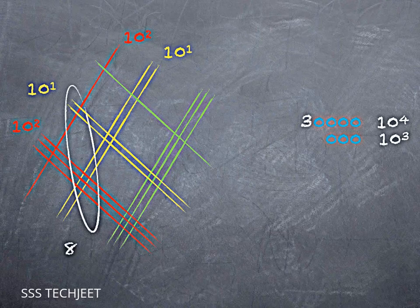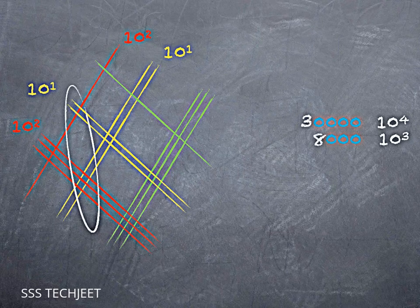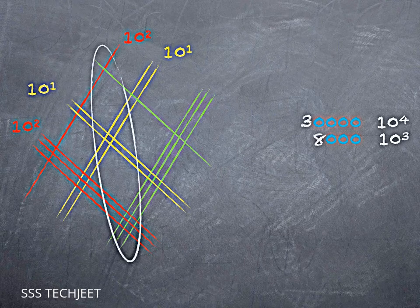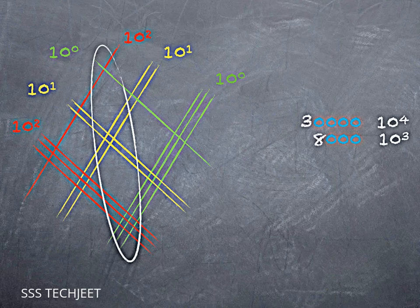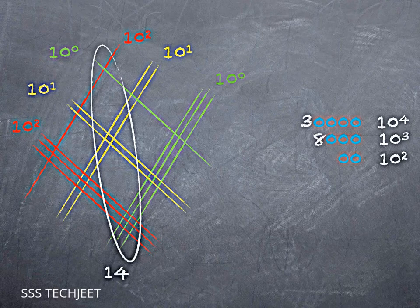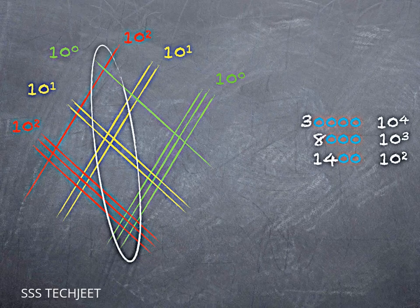If I bring the ones place into the mix, now I either have ten to the zero times ten-squared, which is ten-squared, or I have ten to the first times ten to the first, which is ten-squared. Either way, I get two trailing zeros in the hundreds place. So when I count up those fourteen intersections, that tells me I have fourteen groups of a hundred.